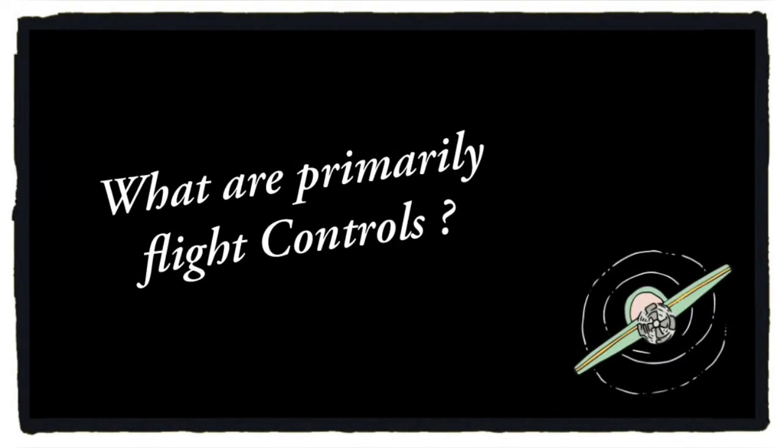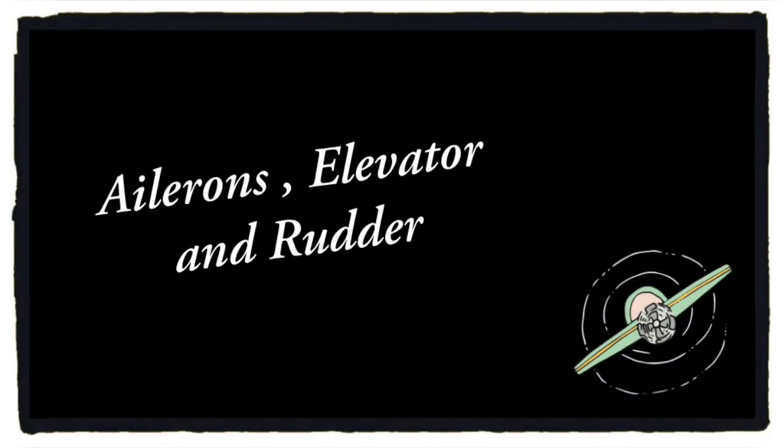So what are primary flight controls? These are the main control surfaces with which an aircraft changes its direction of motion. They are ailerons, elevator, and rudder.